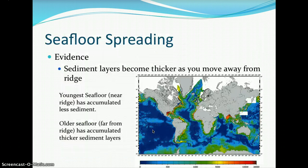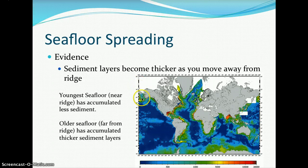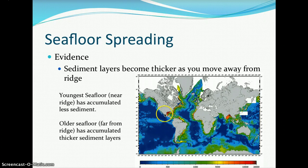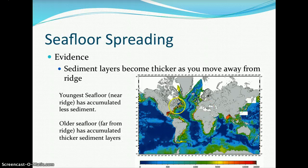Evidence for seafloor spreading: sediment layers on the seafloor become thicker as you move away from the ridge. Moving away from the mid-Atlantic ridge, which runs up the middle of the Atlantic Ocean Basin, the older oceanic crust closer to the continents has had more time for sediments to deposit. So there is more sediment thickness on the oldest seafloor, and the youngest crust near the mid-ocean ridge has less sediment accumulation.